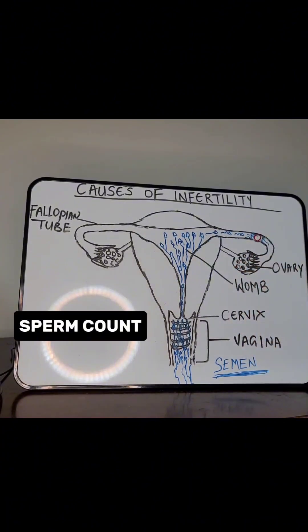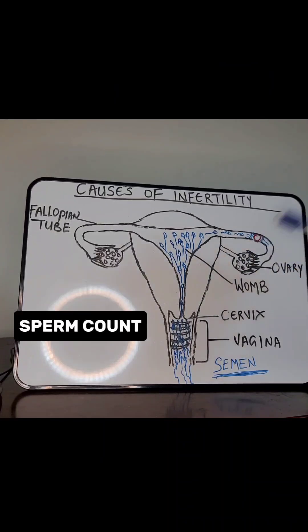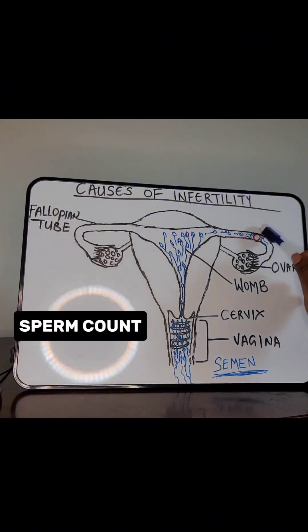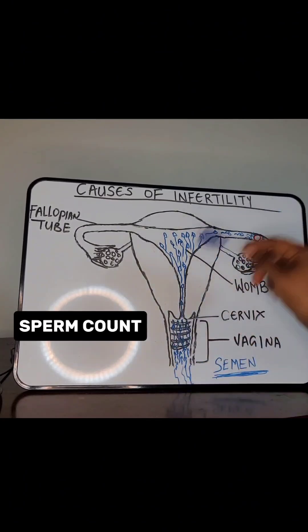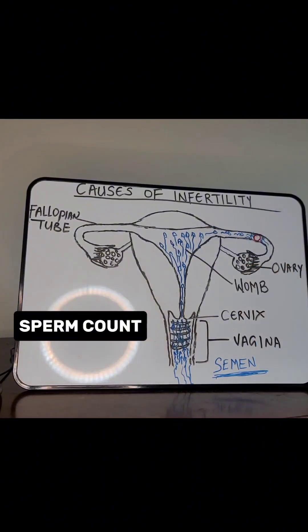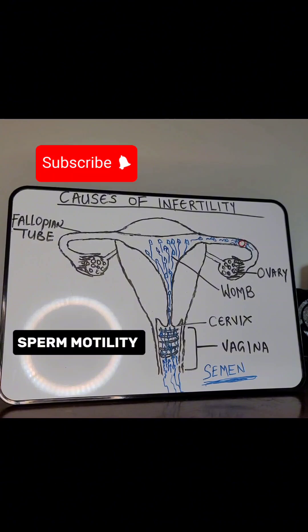Sperm cells encounter many obstacles on their way to the egg. When they finally reach the egg, you need a lot of them because the egg has a protective covering — a protective layer. You need many sperm cells working together to break down that protective layer, and then one will finally penetrate and fertilize the egg. So yes, you need millions so that after overcoming all these obstacles, you still have some left to achieve fertilization.